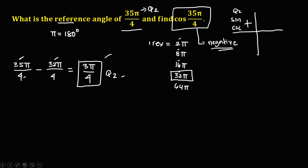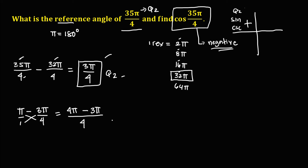To find the reference angle using the coterminal angle, since it's in quadrant 2, we compute π minus 3π over 4. Cross-multiplying gives 4π over 4 minus 3π over 4. So 4π minus 3π equals π, giving us π over 4. This is the reference angle.